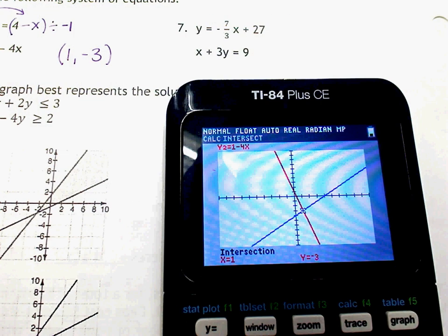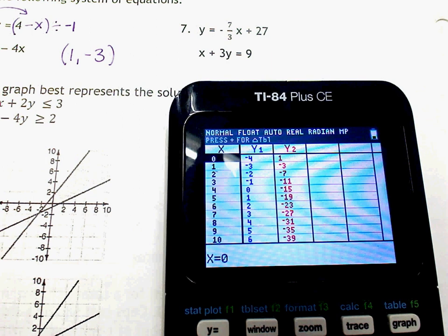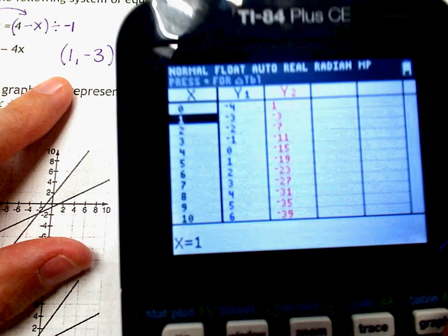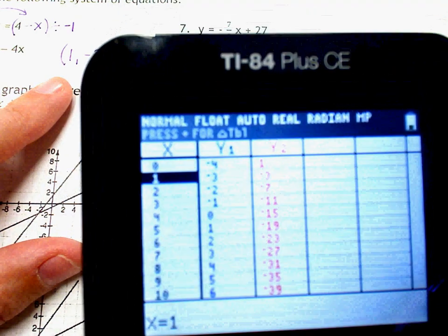So that's all we have to do for number 6. If you want to, you can also go to your table. And if you go down to number 1, they're both negative 3 at the same time. So there you go.